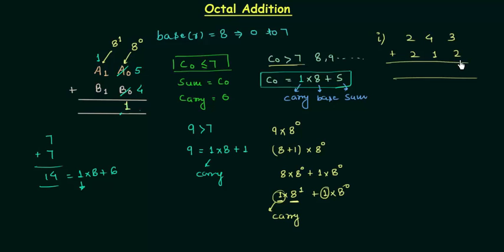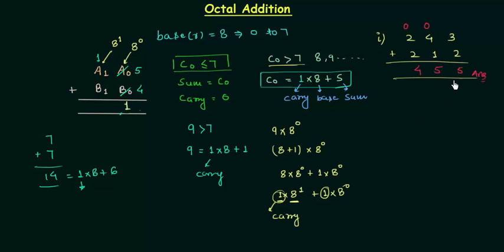Now solving the example: 3 plus 2 is 5, and 5 is less than 7, so carry is 0 and sum is 5. Next, 0 plus 4 plus 1 is again 5, so sum is 5 and carry is 0. Then 0 plus 2 plus 2 is 4, and 4 is less than 7, so carry is 0. So 4, 5, 5 is the answer of this octal addition.